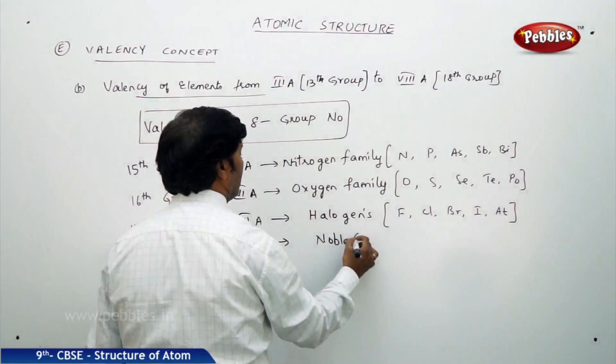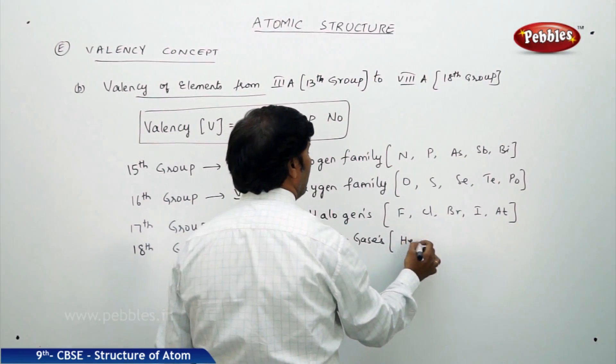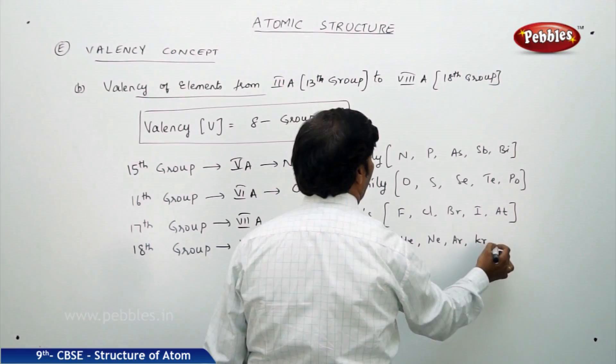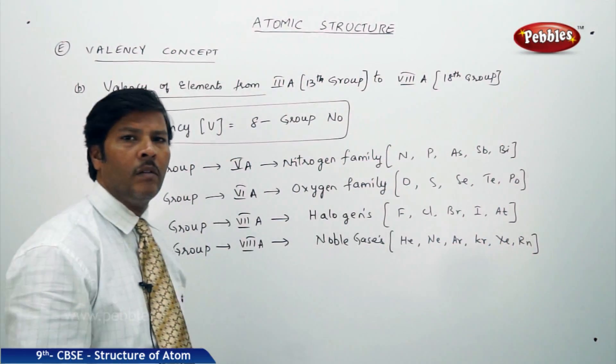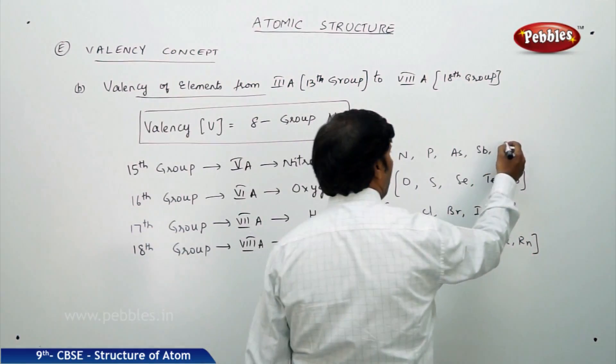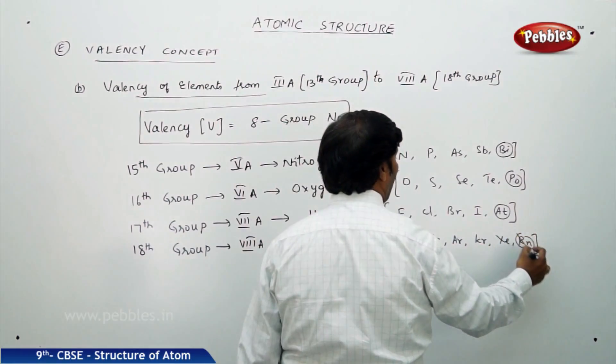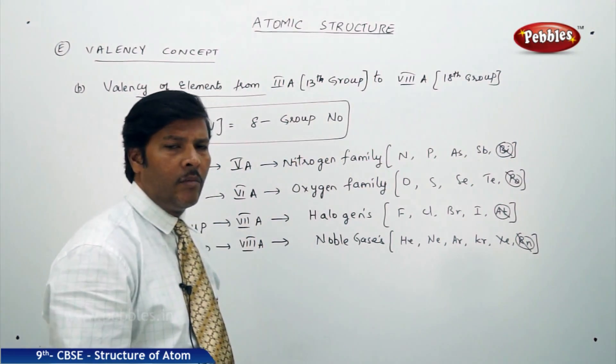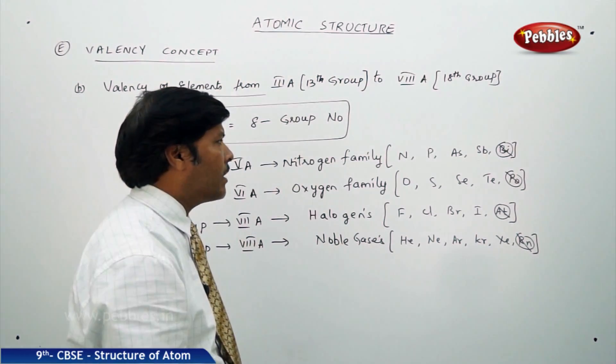Helium, neon, argon, krypton, xenon and radon. Bismuth, polonium, astatine, radon, all these are radioactive elements. They need not be under our discussion. So let us ignore all the radioactive elements.